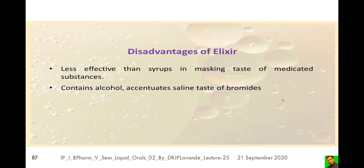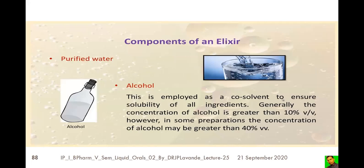The disadvantages include: elixirs are less effective than syrups in masking the taste of medicinal substances. Syrups contain a larger proportion of saturated sugar solution, which better masks bitter or unpleasant taste of the active ingredient. Because the sugar concentration is lower in elixirs, they are not as suitable for masking bitter or acrid tastes. Additionally, alcohol in elixirs can accentuate the saline taste of bromides.